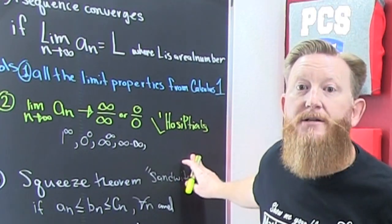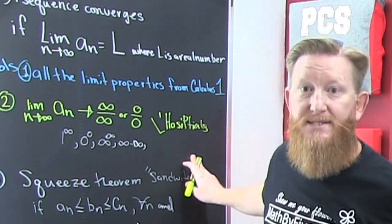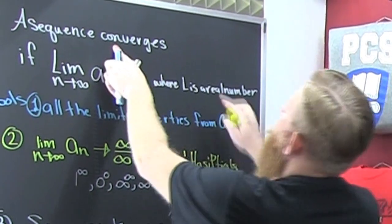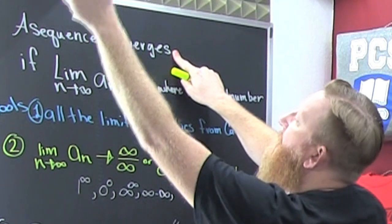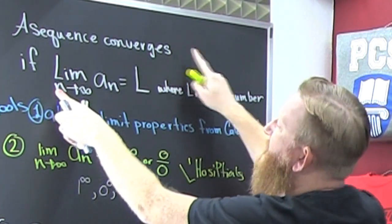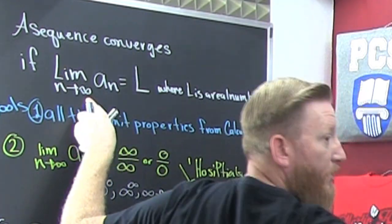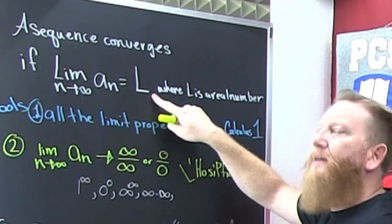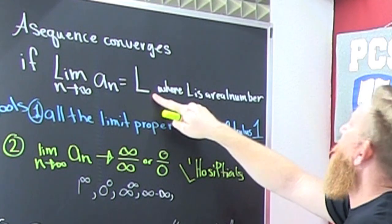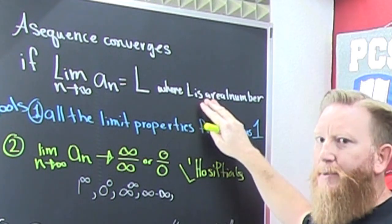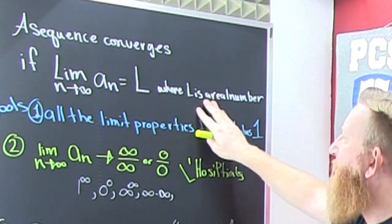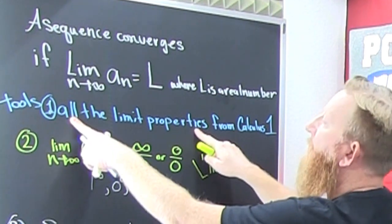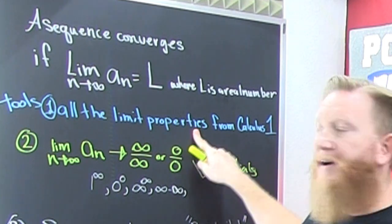There are other techniques to see whether or not a sequence converges beyond just graphical methods. We say a sequence converges if the limit as n goes to infinity — we're talking about the tail — equals L, where L is some real number.